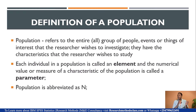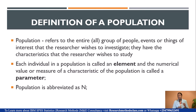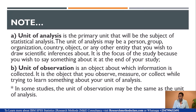Note that we add events or things to take care of other disciplines of research which are not necessarily social science research. For social science research, we mainly deal with people. Each individual in a population is called an element. The numerical value or measure of a characteristic of the population is called a parameter. Population is abbreviated as capital N, and the sample is abbreviated as small n.